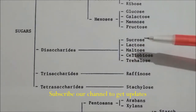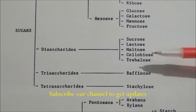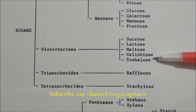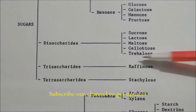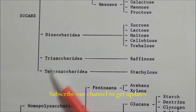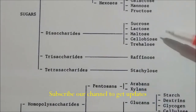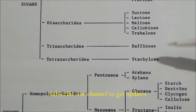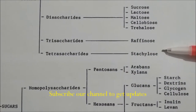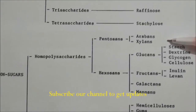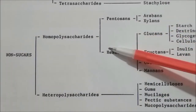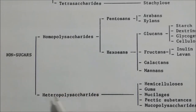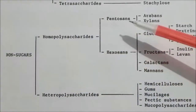For disaccharides, we have sucrose, lactose, maltose, cellobiose, and trehalose. In trisaccharides we have raffinose, and in tetrasaccharides we have stachylose. For non-sugars, there are two types: homopolysaccharides and heteropolysaccharides.